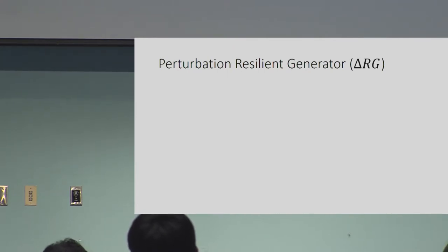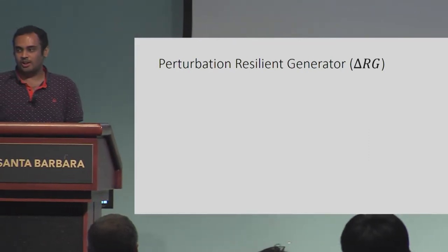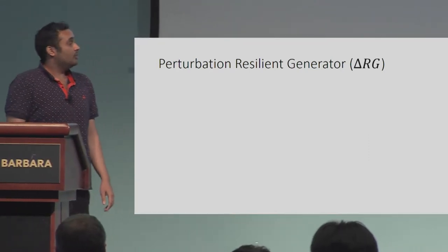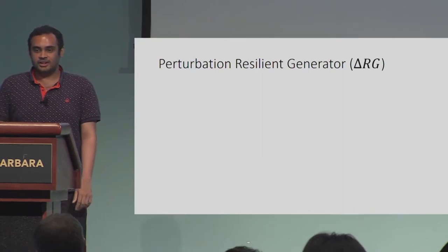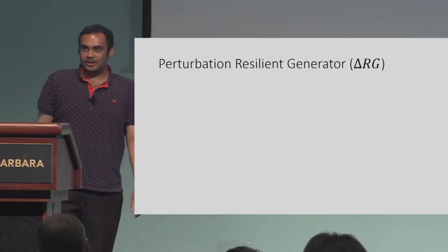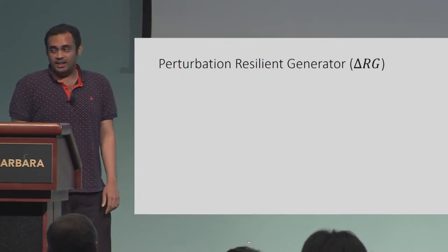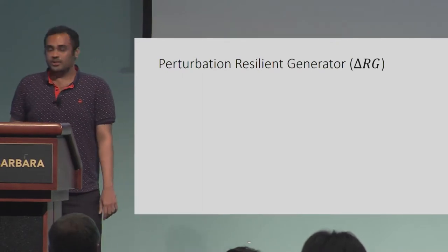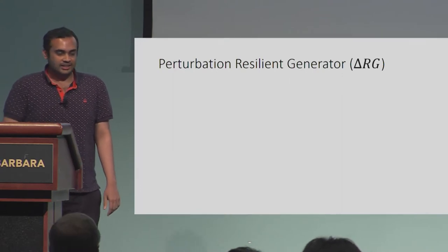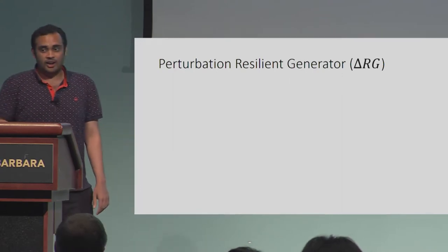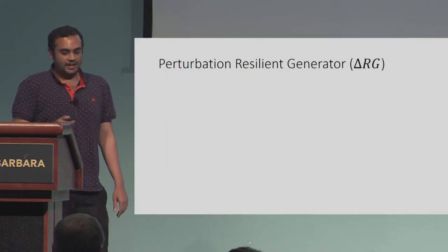Thank you, Christian. My co-author Christian talked about the overall approach that these two works follow, and he also described two aspects in which the works differ: namely the randomness generation aspect and the hardness amplification aspect. Towards the end, he was talking about the notion of pseudo-flood smudging generator. Let me now talk about how these aspects are handled by our work, and in particular let me start with the notion of perturbation-resilient generator.